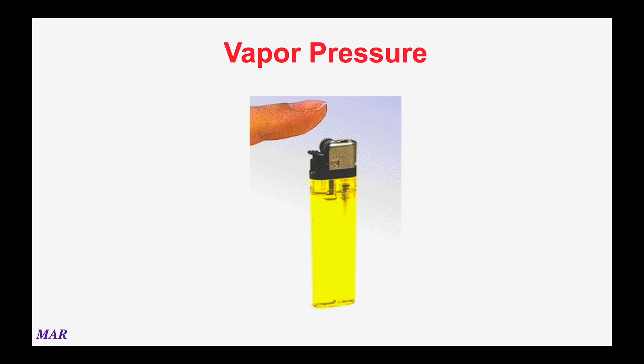When you press the lighter, a spark happens, butane comes off, and a combustion reaction occurs — butane plus oxygen making CO₂ and water — and a flame appears. The flame appears because the vapor pressure over the liquid burns as it escapes. When you close it off again, the equilibrium vapor pressure re-establishes itself for next time. Interestingly, when a lighter is nearly empty and seems dead, sometimes if you wait, the vapor pressure re-establishes itself enough for one last light.